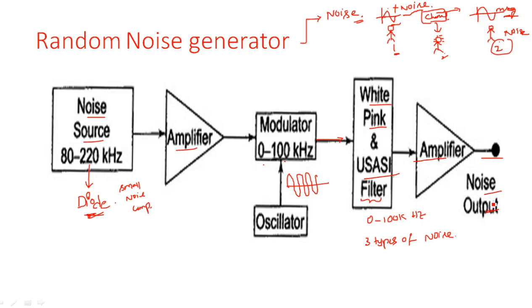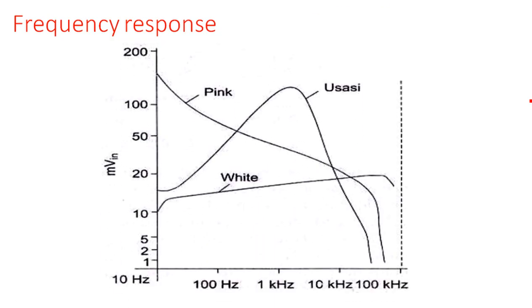You might have heard about white noise in subjects like RVSP — Random Variables and Stochastic Process — or probability theory and stochastic processes. In such subjects you may have heard of white noise, pink noise, Gaussian noise, and other types. Here, based on their amplitudes and characteristics, these names are given. Let us see the frequency response of white noise, pink noise, and USASI noise from this filter.